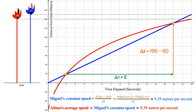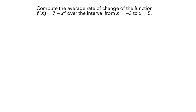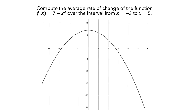Next, let's look at another example. Let's think about how we might compute the average rate of change of the function f of x equals 7 minus x squared over the interval from x equals negative 3 to x equals 5. Here is a graph of the function f of x. Recall that the average rate of change of a function over an interval of input values is the constant rate of change of a linear function that has the same change in output values as the original nonlinear function over the interval of input values.